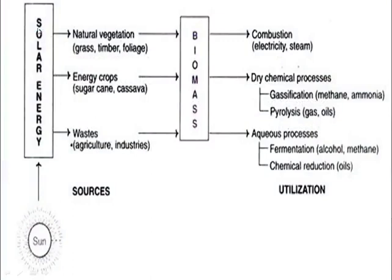This is a very important chart showing how biomass sources are utilized. We have the sun providing solar energy, then natural vegetations which include grass, timber, and foliage, and then energy crops.